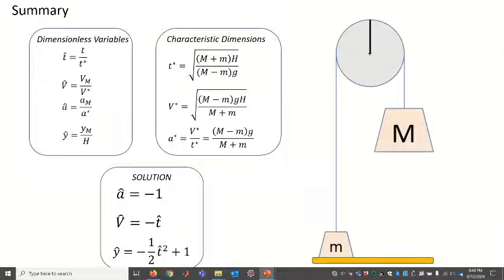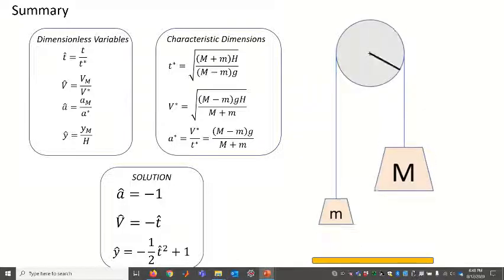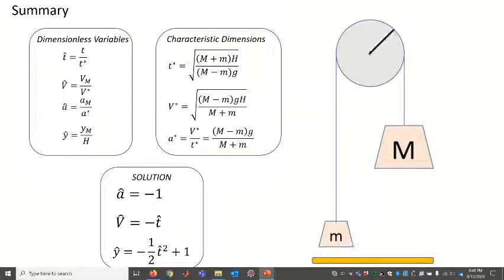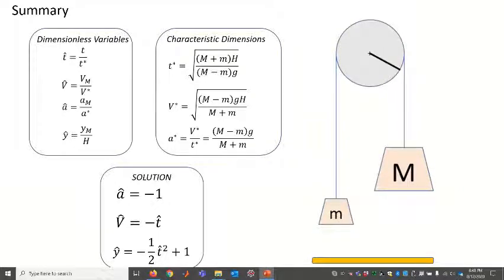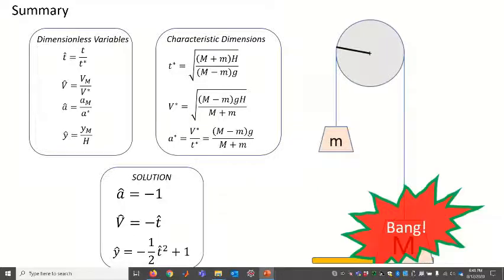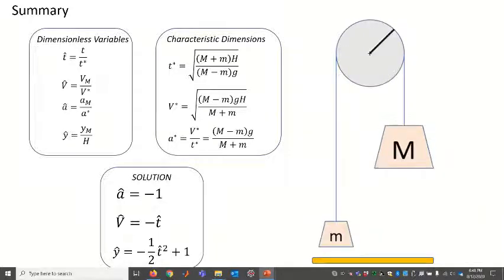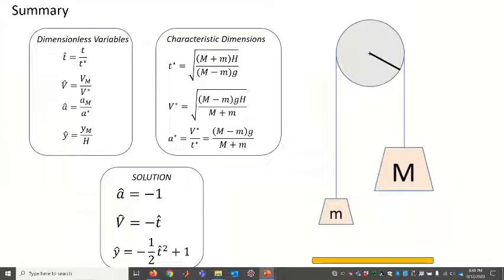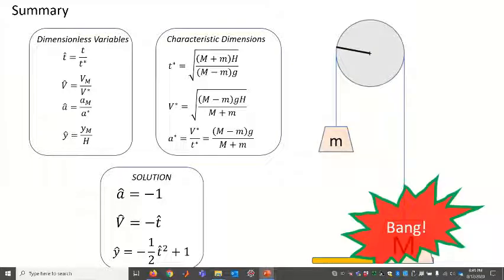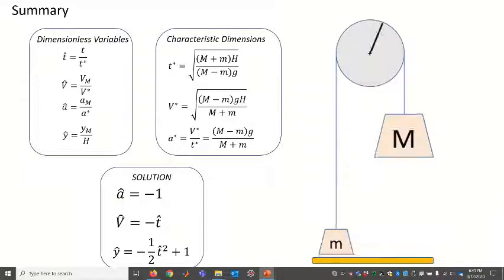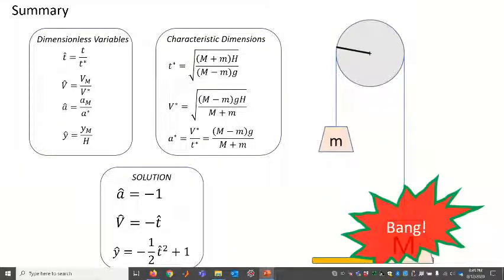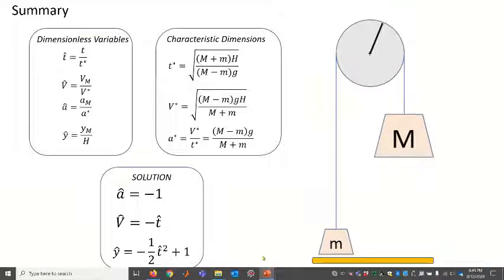The solution with the initial conditions that it starts from rest with the mass elevated is that the acceleration is minus 1, the dimensionless velocity v-hat is minus t decreasing linearly with time, and y has a one-half t squared plus 1 term, starting at time 0 at a value of 1 and decreasing as time goes on. These are the equations we want to input.